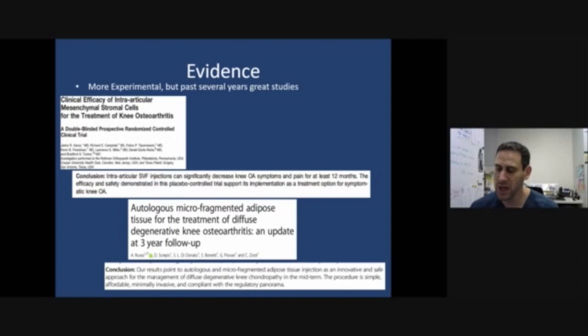The next study showed stem cells, adipose stem cells, so stem cells that we get from your fat, and showed three-year follow-up and showed how it was safe, it was minimally invasive, and how it prevented degradation of arthritis.